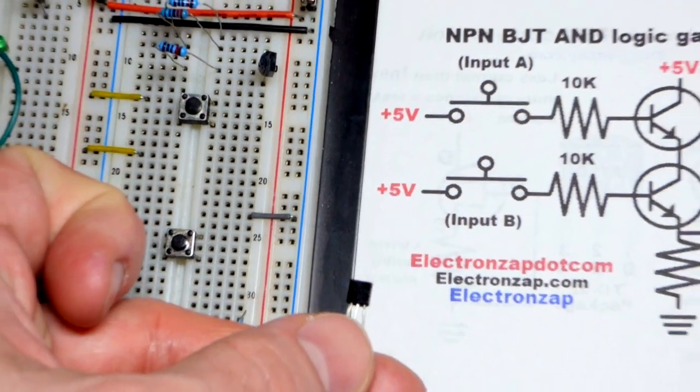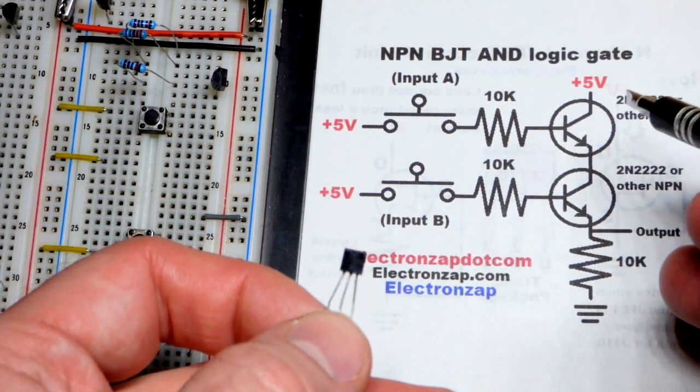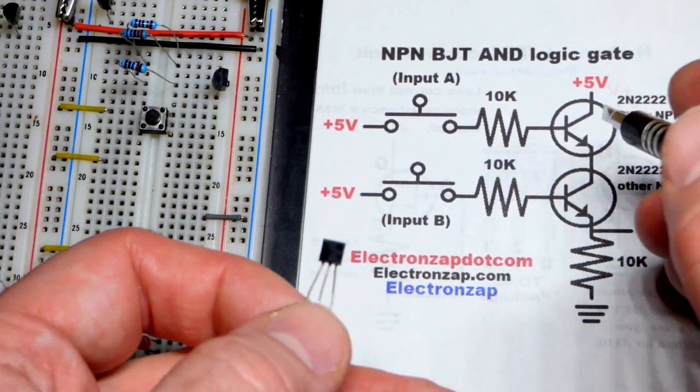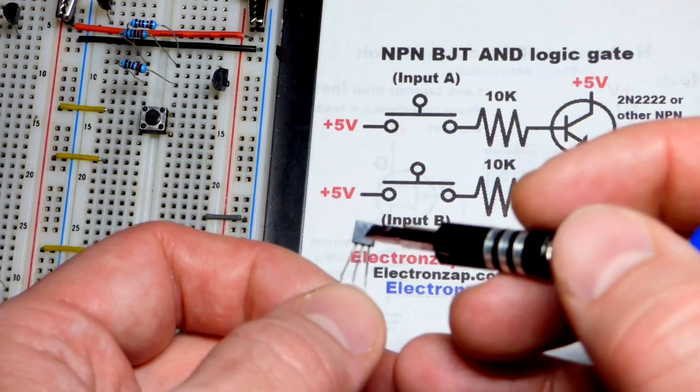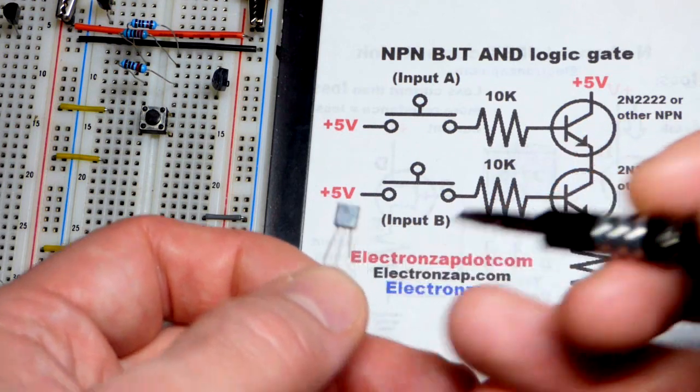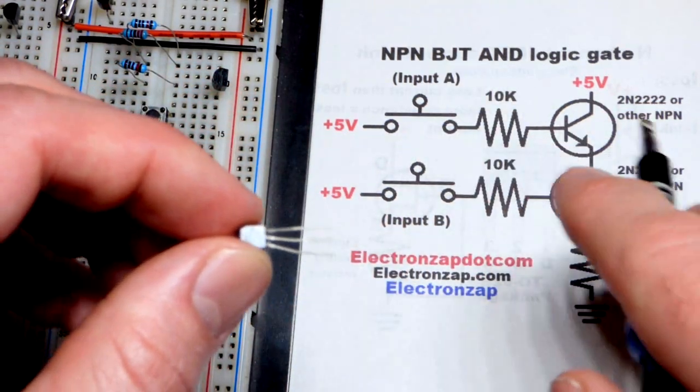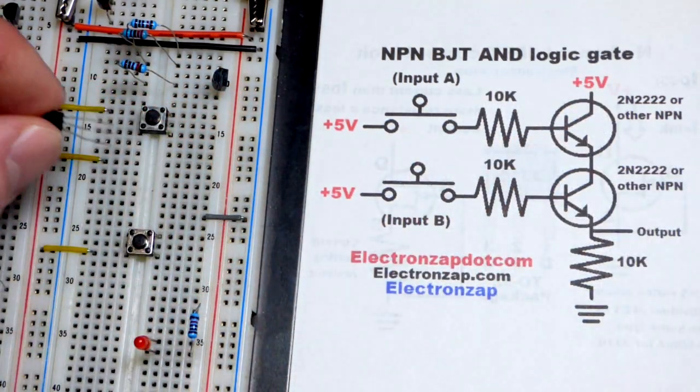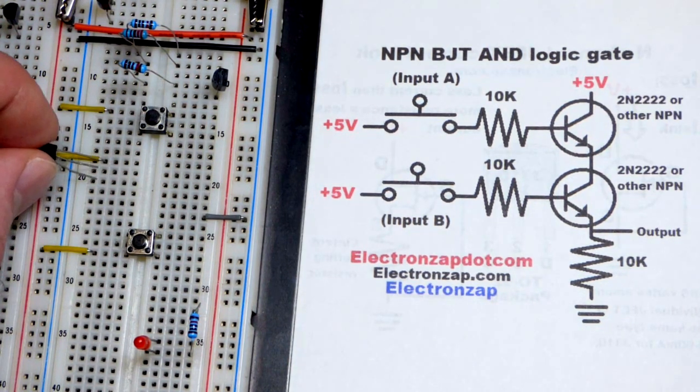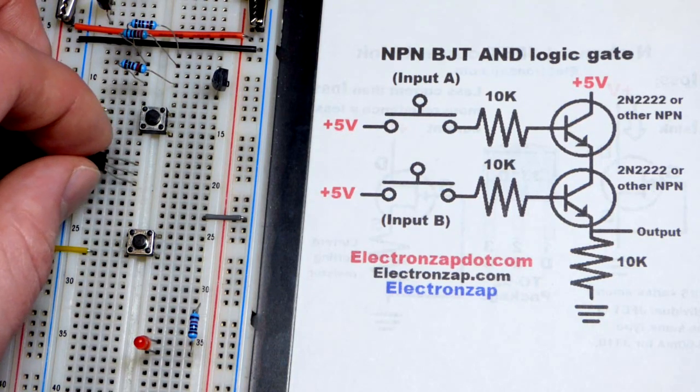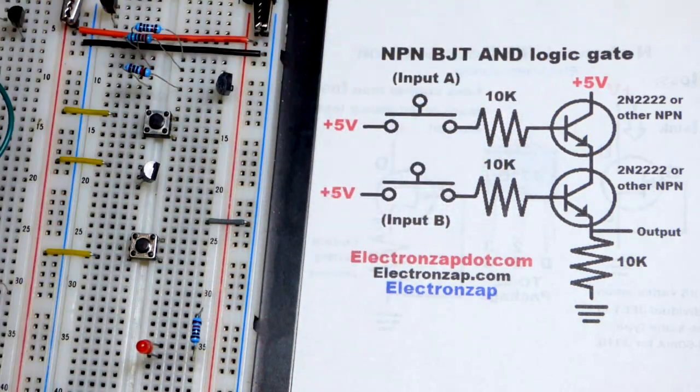We're going to grab the 2N2222 right here, and looking at the flat side, if it starts with 2N, if 2 and N are the first and second number and letter, there's nothing else before it. The left pin's emitter, middle pin base, right pin collector. That's what I've noticed so far with every bipolar junction transistor that starts with 2N. We got the collector to the yellow jumper here, and I'm going to move it all the way to the right.